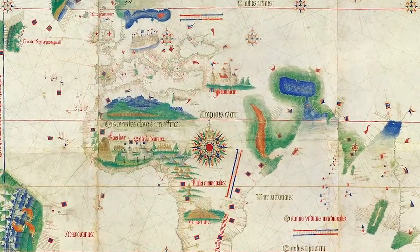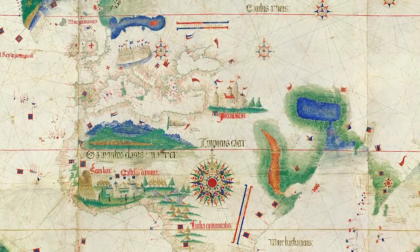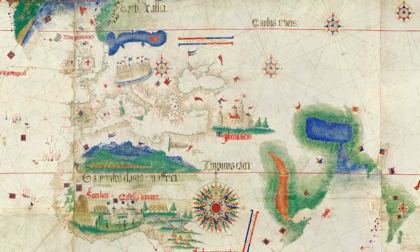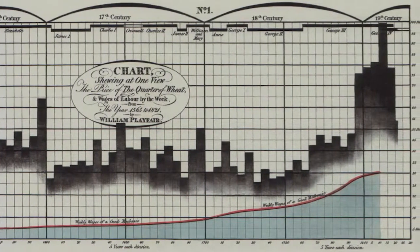Data visualizations are definitely having a moment right now. Online, we are surrounded by images that show information in all kinds of ways. But the history of data visualization goes back way further than the web. Visualizing data began long ago with maps, which are the visual representation of geographic data. This map of the known world is from 1502. Map makers continued to improve their visualizations as new lands were charted and new methods for visualizing data were created. Scientists and mathematicians began to truly embrace the idea of arranging data visually in the 1700s and 1800s. This bar graph is from 1821 and it doesn't look too different from bar graphs we see today. Since the beginning of the digital age of data analytics in the 1990s, the scope and reach of visualizations have grown. As we keep learning how to more efficiently communicate with visuals, the quality of our insights continues to grow too.